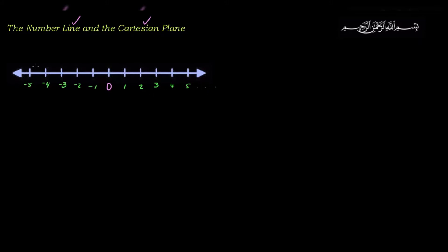Now, you must understand there are infinite numbers between each of these labeled values. So I could have a number like 1.5 that's not labeled, or over here a number like 3.1, etc. The number line contains all the real numbers — all the numbers we can think about — but they are not all listed. The ones that are listed are the ones useful for solving that particular problem.